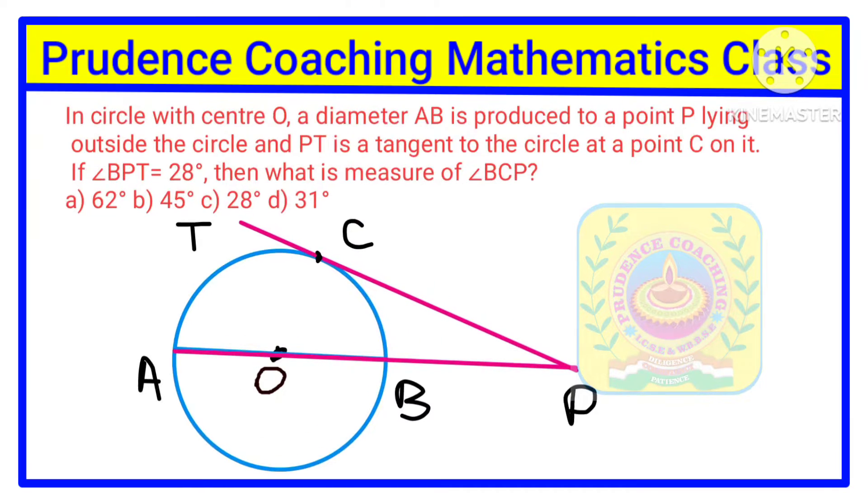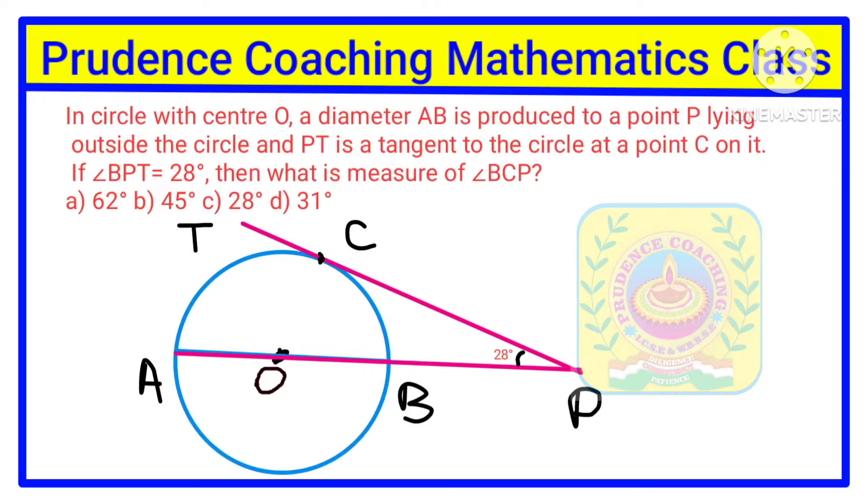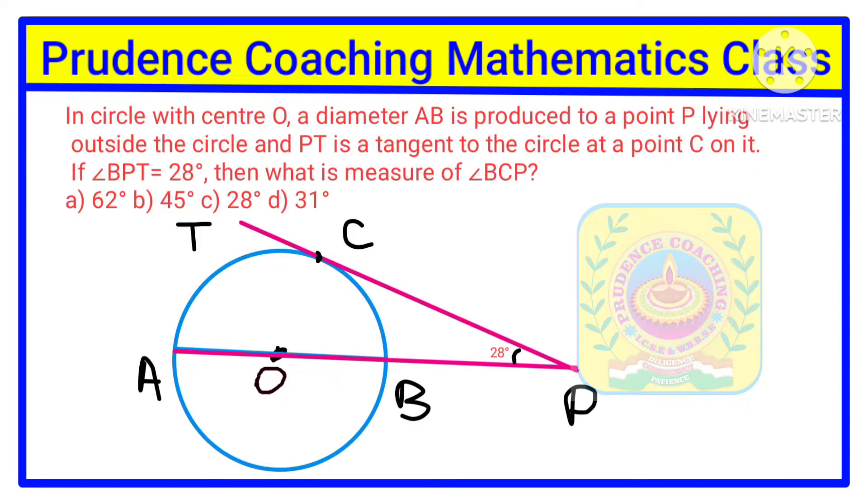If angle BPT is given as 28 degrees, then what is the measure of angle BCP? Let us join line BC. Then you will get angle BCP, and we need to find this angle.